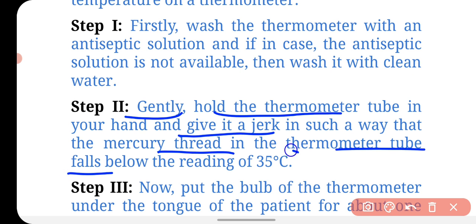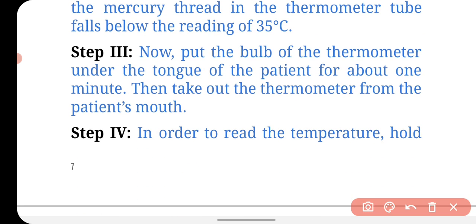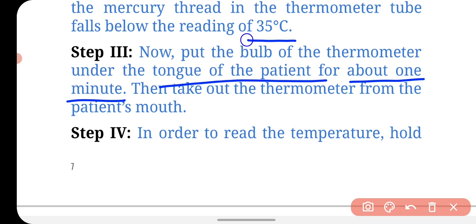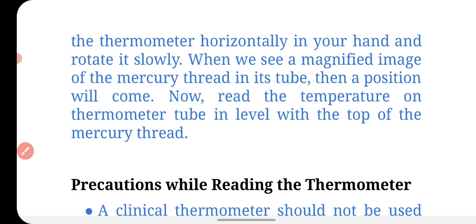Ensure the reading is at 35 degrees Celsius before use. Then put the bulb of the thermometer under the tongue of the patient for about one minute. To read the temperature, hold the thermometer horizontally and note the mercury level.